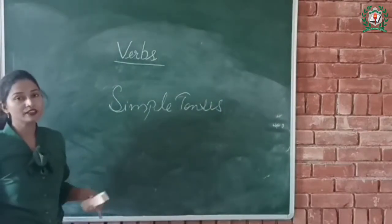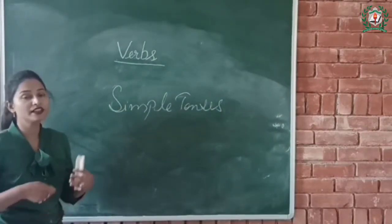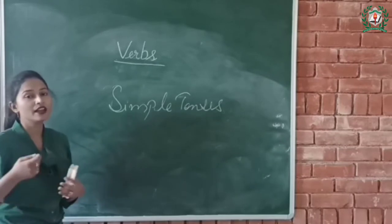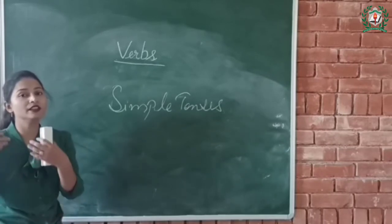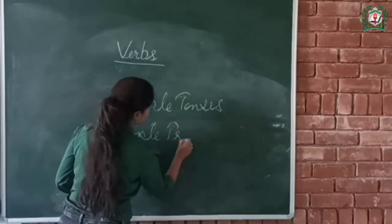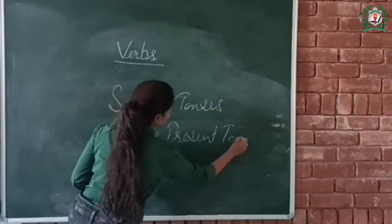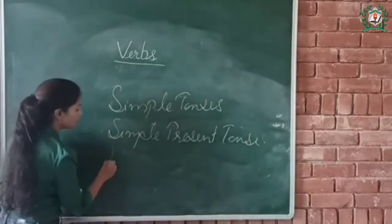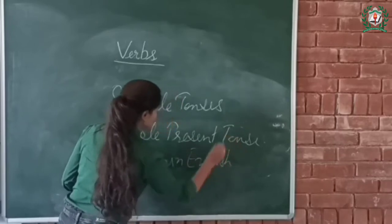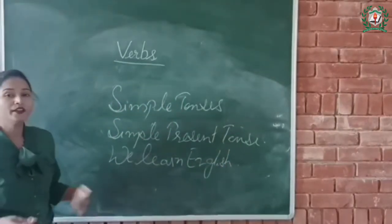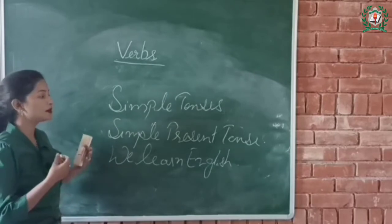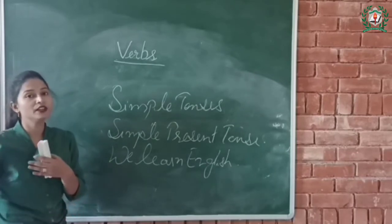Simple tenses usually refer to a single action. Simple tenses express facts and situations that existed in the past, exist in the present, or will exist in the future. Let's start with the simple present tense. For example, 'We learn English.' We learn English every day. We use the simple present tense to talk about actions that we do every day.